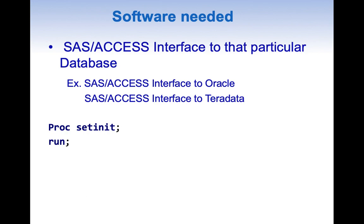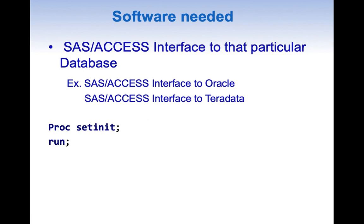Now let us see what kind of software we need to interact with databases or DBMS. A SAS Access Interface to a particular database is always needed. For example, if you want to interact with Oracle you need SAS Access Interface to Oracle, and if you want to interact with Teradata you need SAS Access Interface to Teradata. To check whether you have these, you can run a PROC SETINIT — it will tell you what licenses you have and whether you have the SAS Access Interface to the particular database you are looking for.